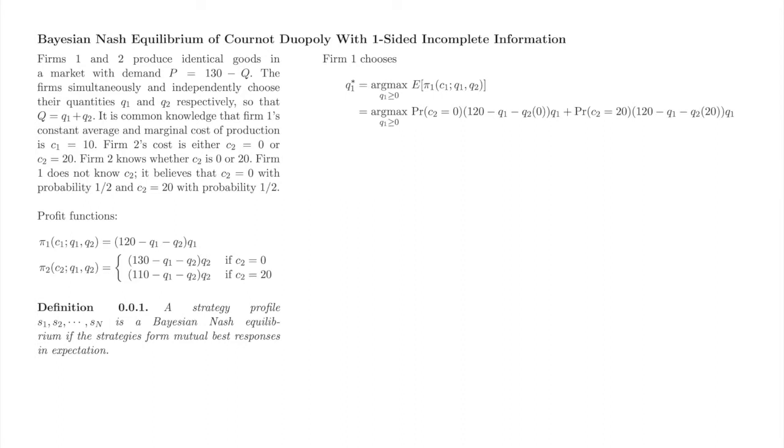We'll tackle firm 1's problem first. Firm 1 maximizes its expected profit given its beliefs about firm 2's type. Firm 1 picks a single quantity, q1 star. Half the time, firm 1 competes against a firm 2 with c2 equals 0, which produces q2 of 0. Half the time, firm 1 competes against a firm 2 with c2 equals 20, which produces q2 of 20.